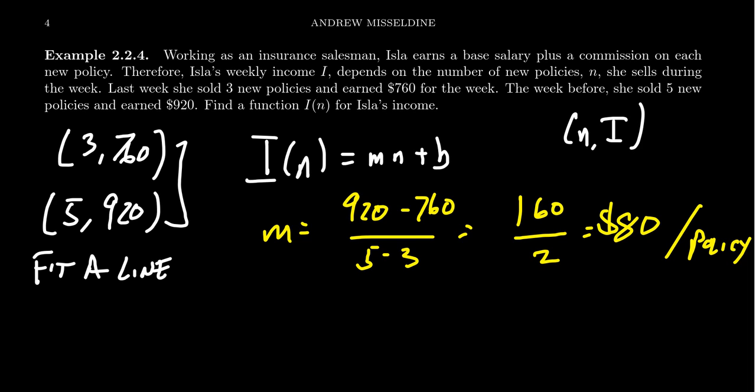And then in terms of the y intercept, we could solve the y intercept or we could just use the point slope form. That's the approach I'm going to take. We're going to take I minus, pick your favorite point here. I'm going to take this one right here. It doesn't really matter which one you do. You're going to take y minus seven sixty, and this is going to equal eighty times n minus three.